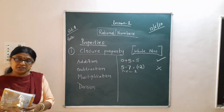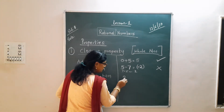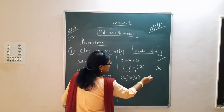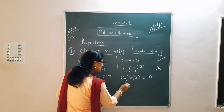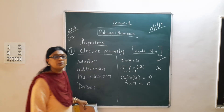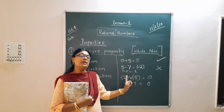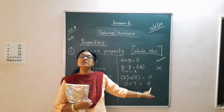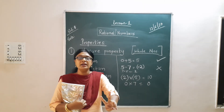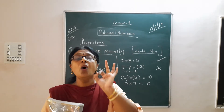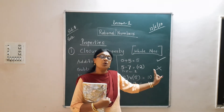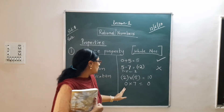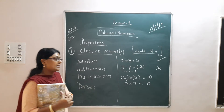Now comes multiplication. If I take 2 multiplied by 5, I get 10. If I take 0 multiplied by 7, I get 0. So when I multiply 2 whole numbers, 2 is a whole number, 5 is a whole number, and the answer 10 is also a whole number. Similarly 0 and 7 give 0, which is a whole number. So closure property for multiplication is true.